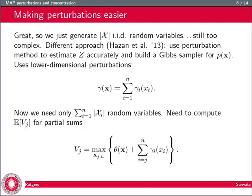Work by my co-author Tamir and collaborators has shown you can use this perturbation approach to estimate the partition function accurately enough to build a Gibbs sampler for p of x. A Gibbs sampler samples each coordinate one at a time conditioned on the other coordinates. The key is using a lower dimensional perturbation structure. Instead of one independent Gumbel for every configuration, represent the perturbation as the sum of independent Gumbels, one for each coordinate—linear in the number of variables instead of exponential.